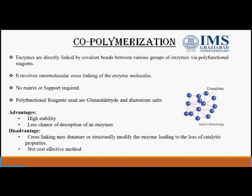Copolymerization or cross-linking involves no use of matrix or support. It involves the intermolecular cross-linking of enzyme molecules, where enzymes are directly linked by covalent bonds between various groups of the enzyme via a polyfunctional reagent such as glutaraldehyde. One functional group attaches to one enzyme and another attaches to a different enzyme. Advantages include high stability and less chance of desorption. Disadvantages are that cross-linking may denature or structurally modify the enzyme, leading to loss of catalytic properties, and it is not cost effective.